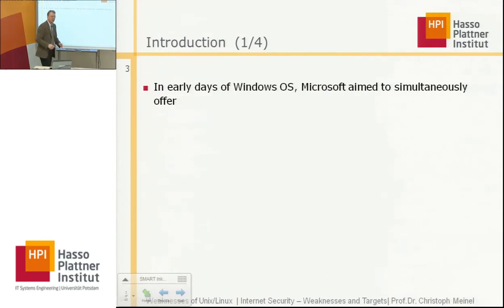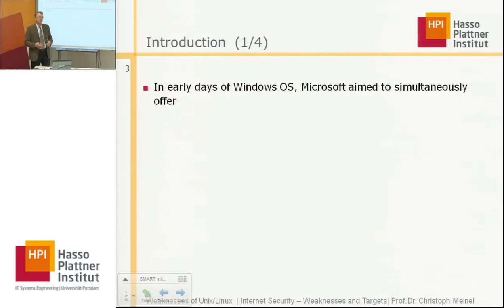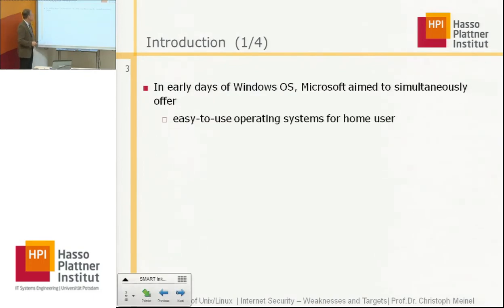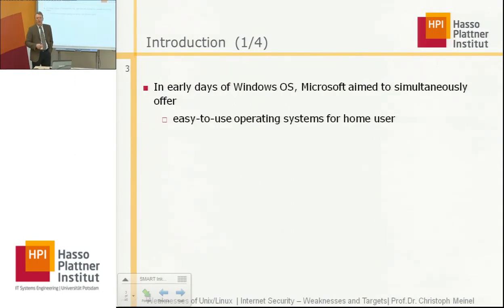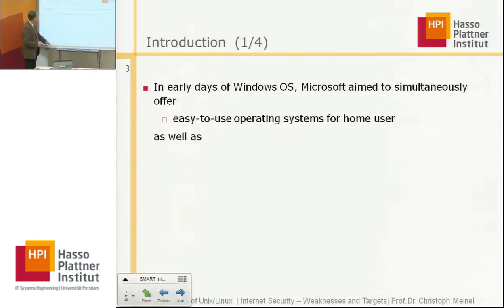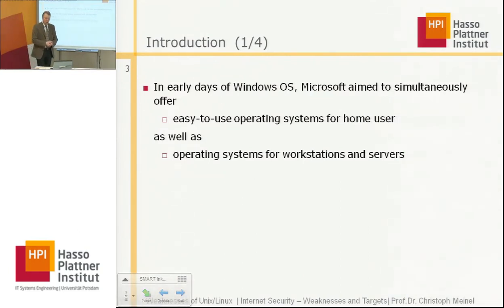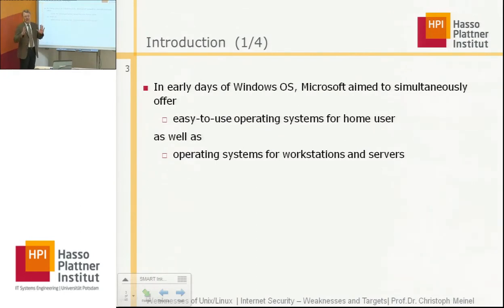If we have a special look at Windows systems — Windows operating systems — then in the early days, Windows had a big problem. They wanted to offer very simple-to-use systems for home users on personal PCs. Home users were not specialists and it was difficult for them to do configuration work. On the other side, they also offered operating systems for workstations and servers, where specialists were able to configure the system correctly.